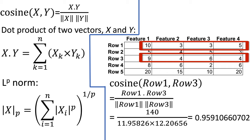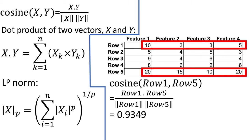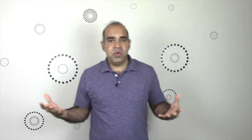Now, compute the cosine similarity between row 1 and row 5. Please do the calculations. The cosine similarity between row 1 and row 5 should be around 0.9349.